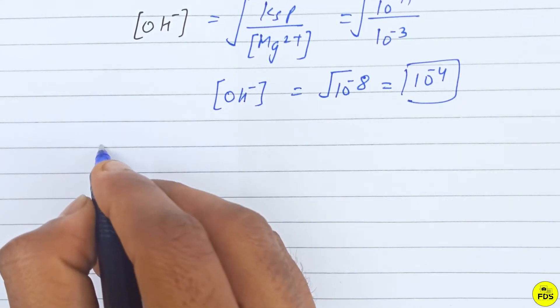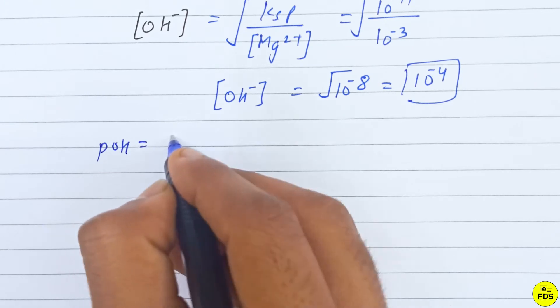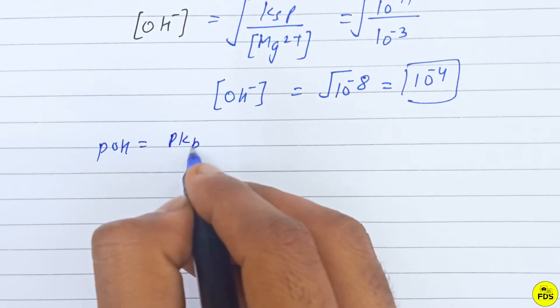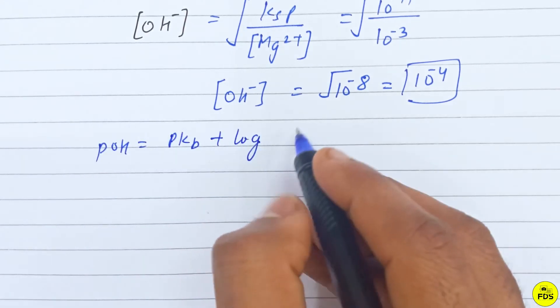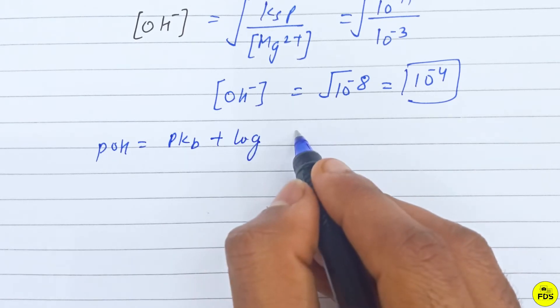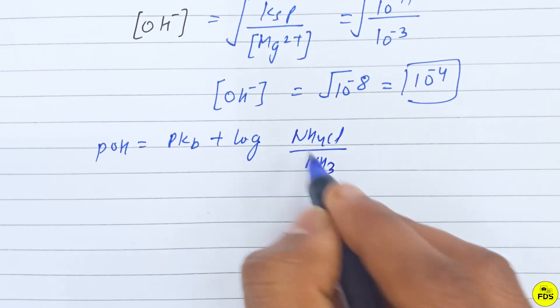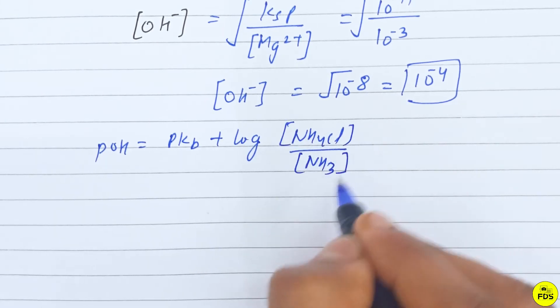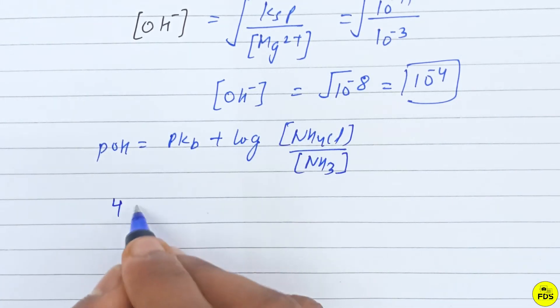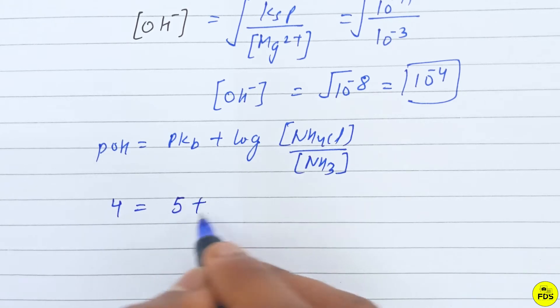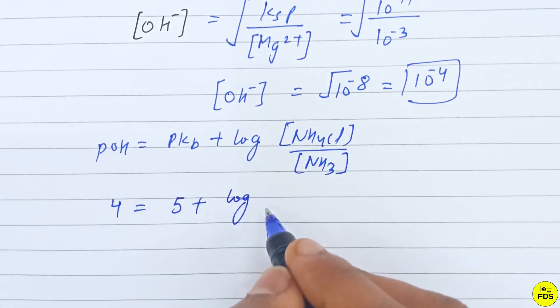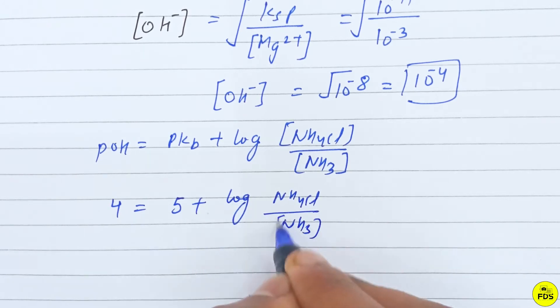pOH is equal to pKb plus log of salt upon base, which is NH4Cl concentration upon NH3 concentration.